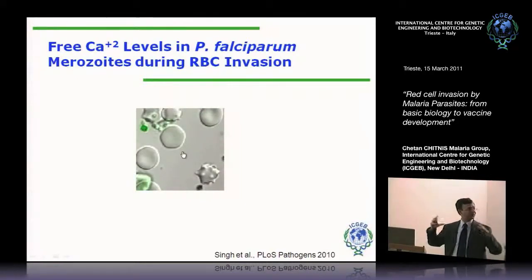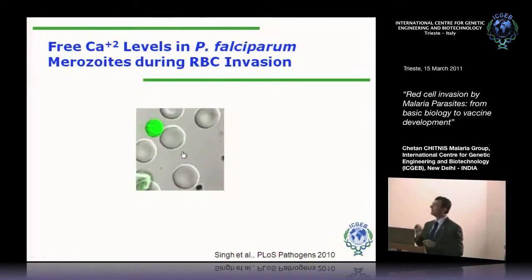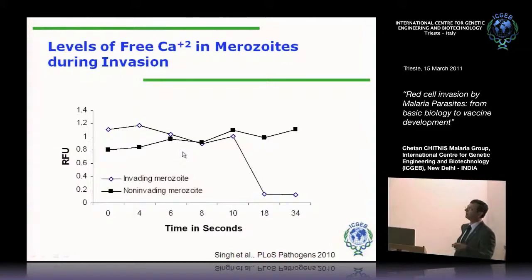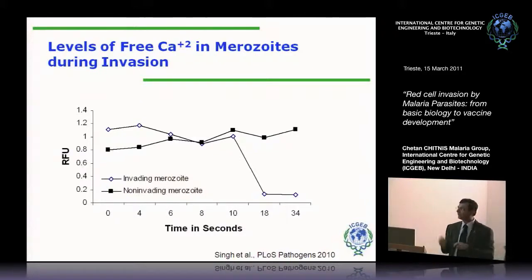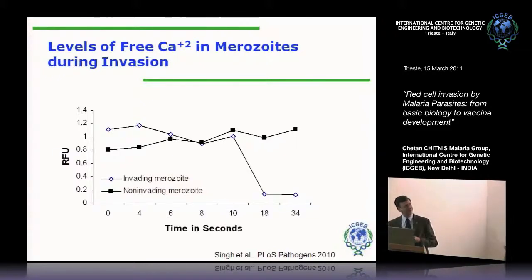The merozoites are green, suggesting calcium levels are high. When a merozoite binds and invades, the merozoite loses its shape, and then restores back the biconcave shape and the parasite starts multiplying. The free merozoites have high levels of calcium. If you look at a merozoite that just swims around and doesn't invade, calcium levels continue to remain high. But if you look frame by frame at a merozoite that invades, once it attaches to a red blood cell, calcium levels drop and then you get invasion.